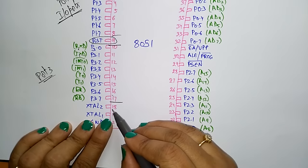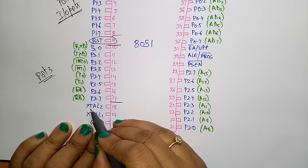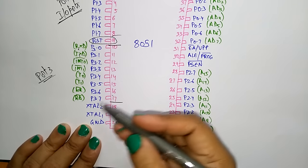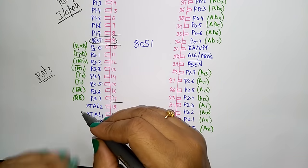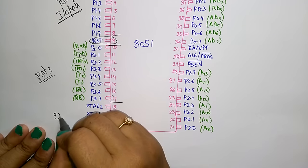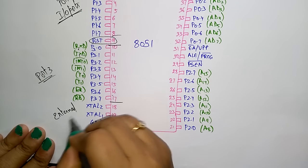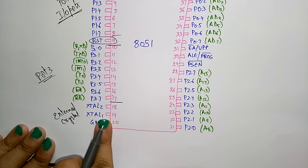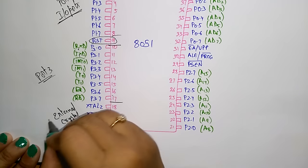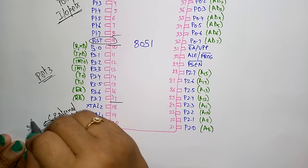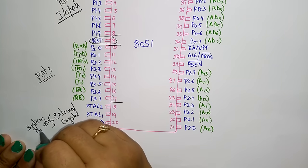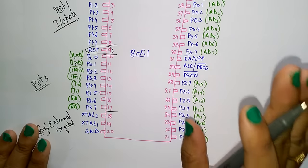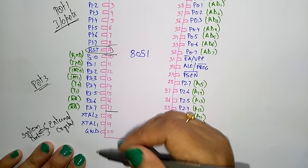Pins 18 and 19 are used for interfacing an external crystal to get the system clock. X1 and X2 — an external crystal is connected to these two pins so that the microcontroller can get the system clock. Pin 20 is the ground pin, which provides ground to the circuit.